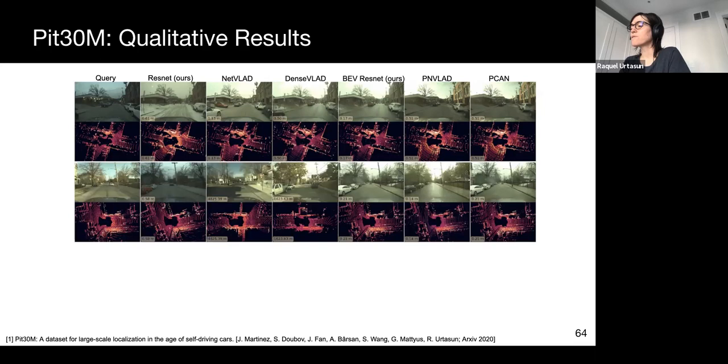In this other example, we see the image network retrieving the same place at night. Methods such as NetVLAD and DenseVLAD find images that look similar, but correspond to a different place.